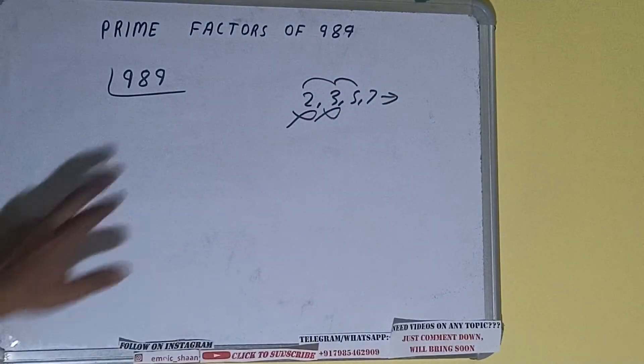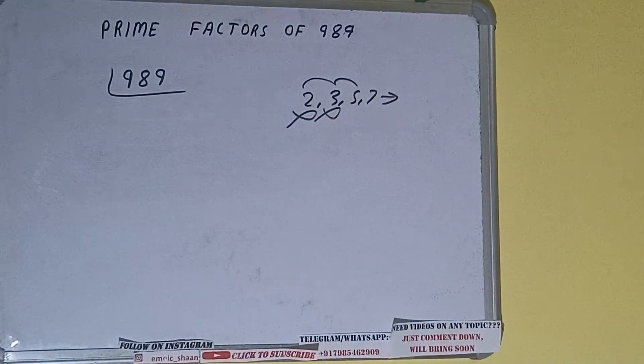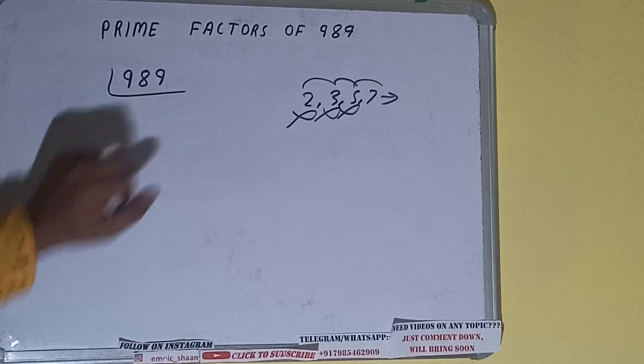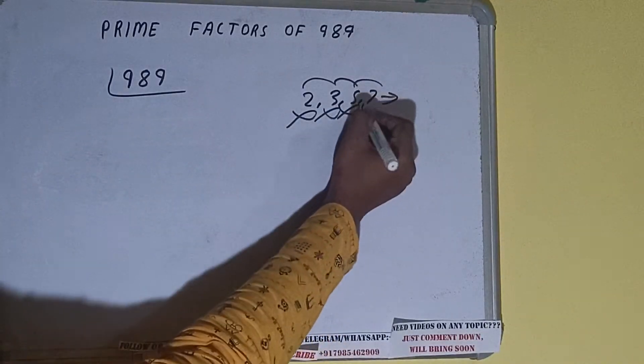Let's check with 5. The last digit is neither 5 nor 0, so it is not divisible by 5. Let's check with 7. 7 into 9 is 7, 2, 8, 7, 4, 0, 28, 7 into 7, 2 left. It is not divisible by 7 also.